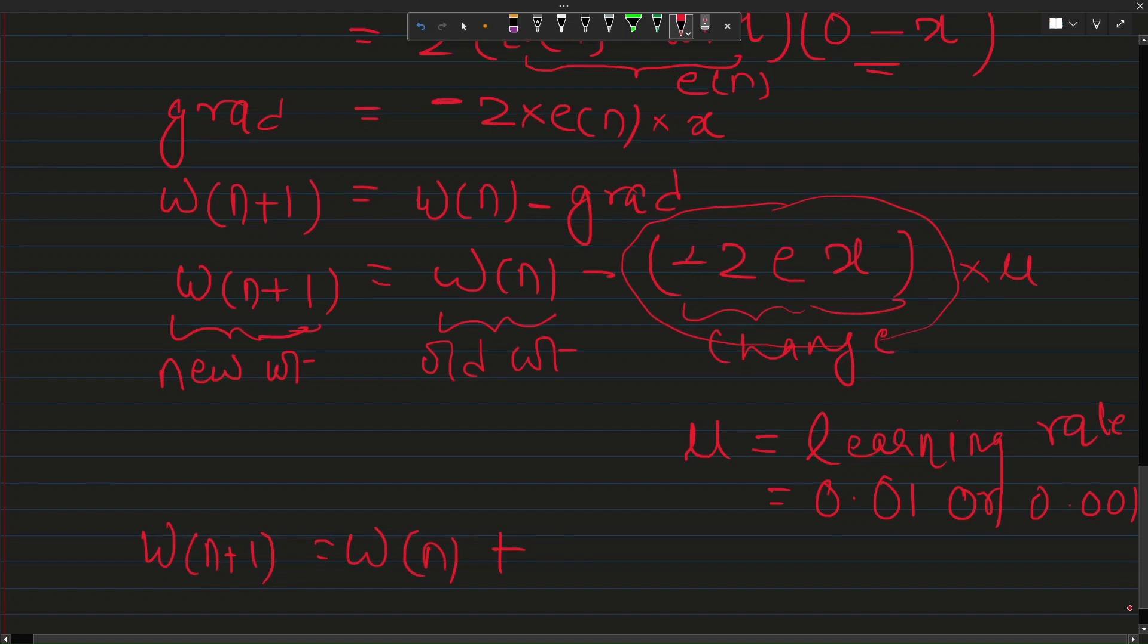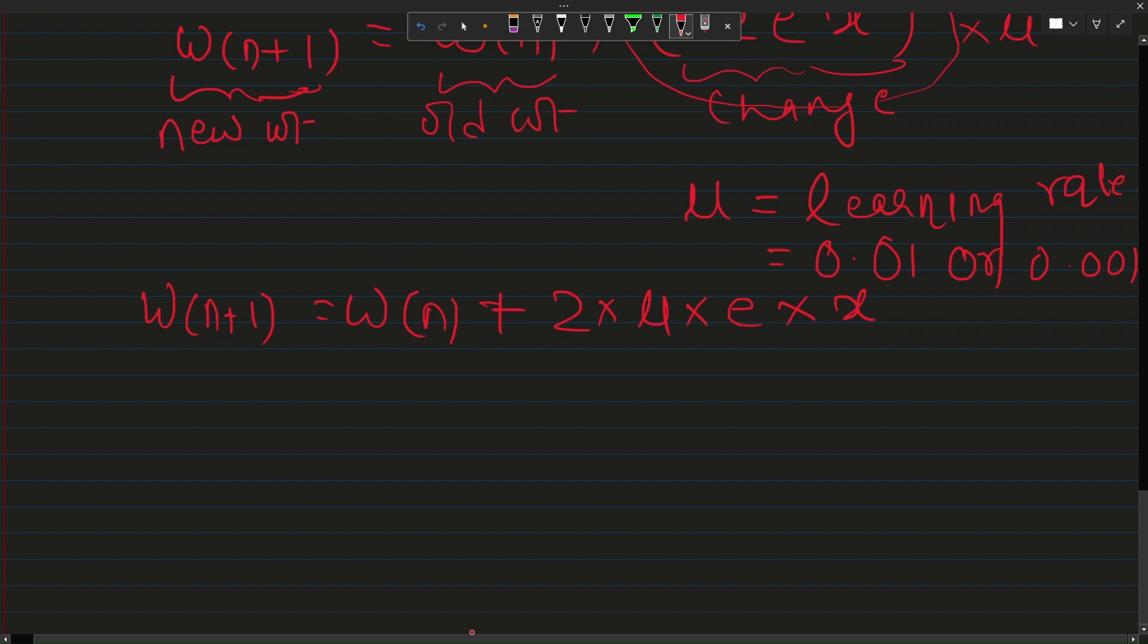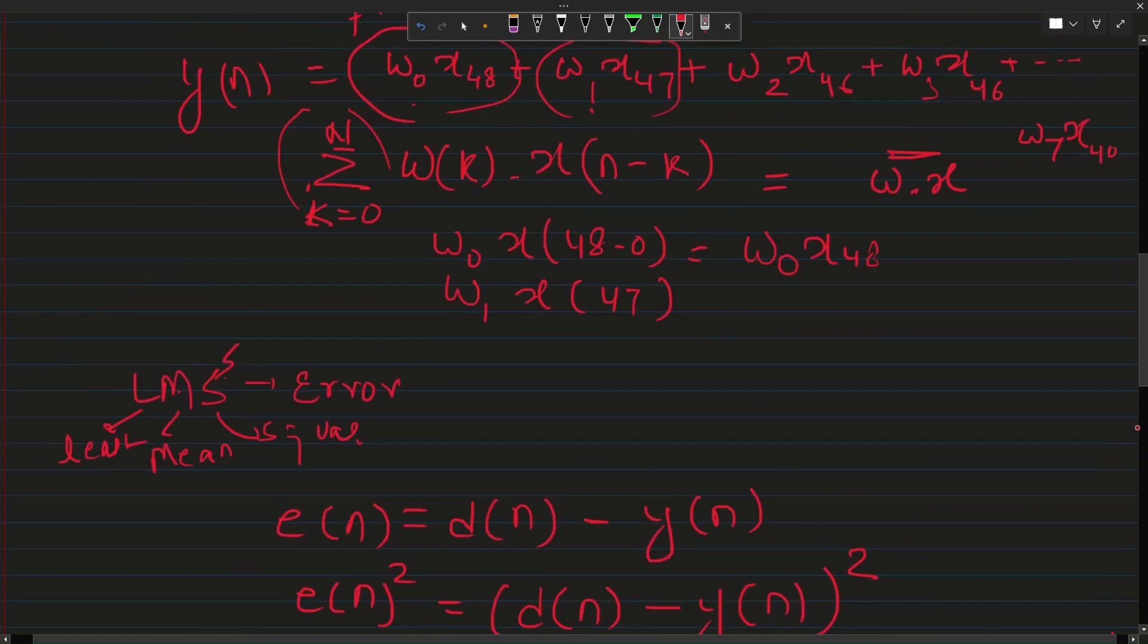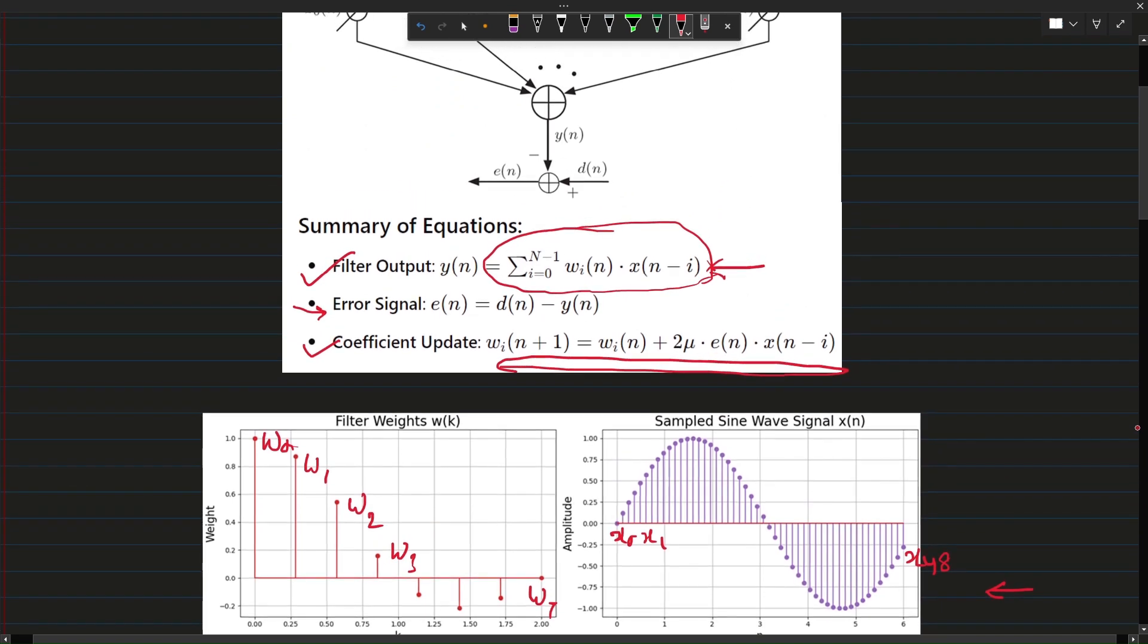What we do is multiply mu to this component. The equation becomes new weight equals old weight, this minus minus becomes plus, times 2 mu times error times the signal input to the filter. You can see how this whole equation has been derived, this is learning rate, this is the error, this is the input to the filter that is the noisy signal x. This equation shows exactly that. This is the new weight, this is the old weight, this is the learning coefficient or learning rate, this is the error and this is the delayed version of the input to the filter or noisy signal.